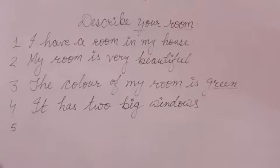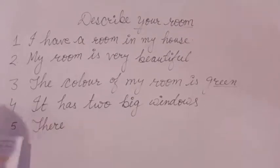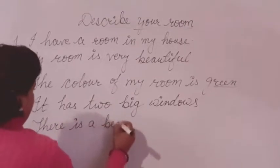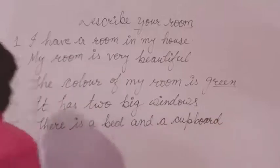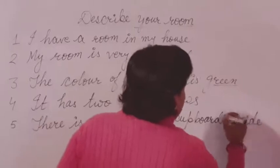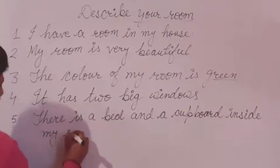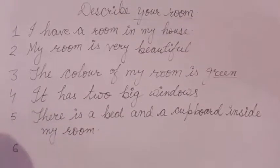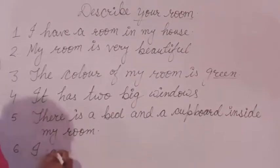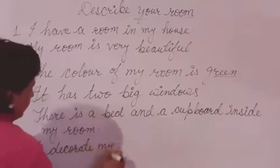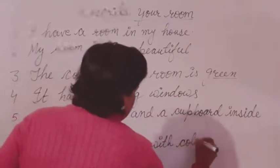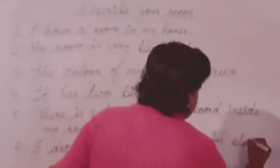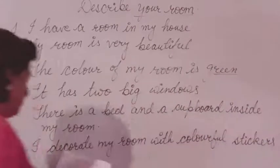Next line is about furniture. What is the furniture inside my room? There is a bed and a cupboard — cupboard means almirah — inside my room. For the sixth line, how do I decorate it? I decorate my room with colorful stickers and paintings.